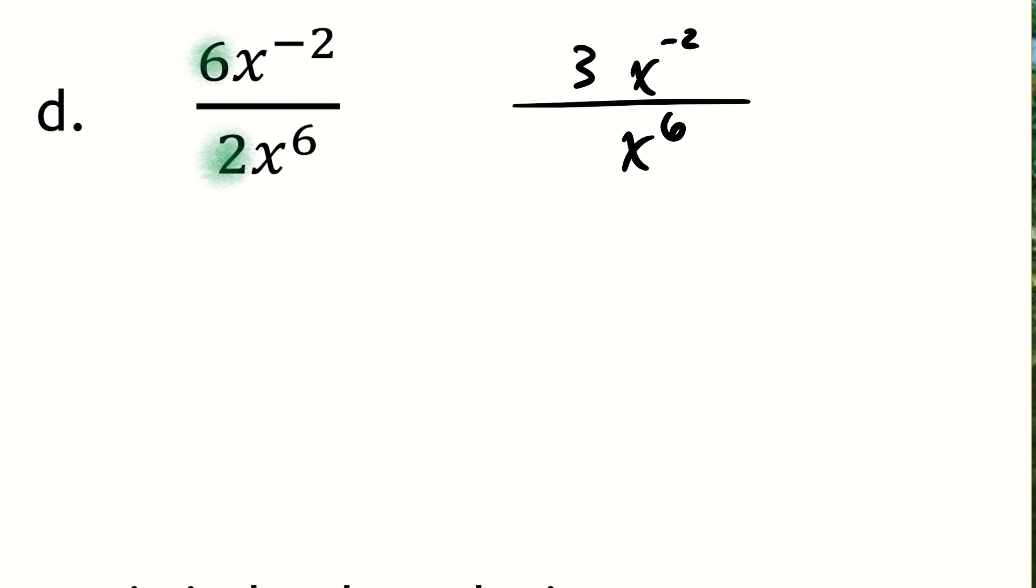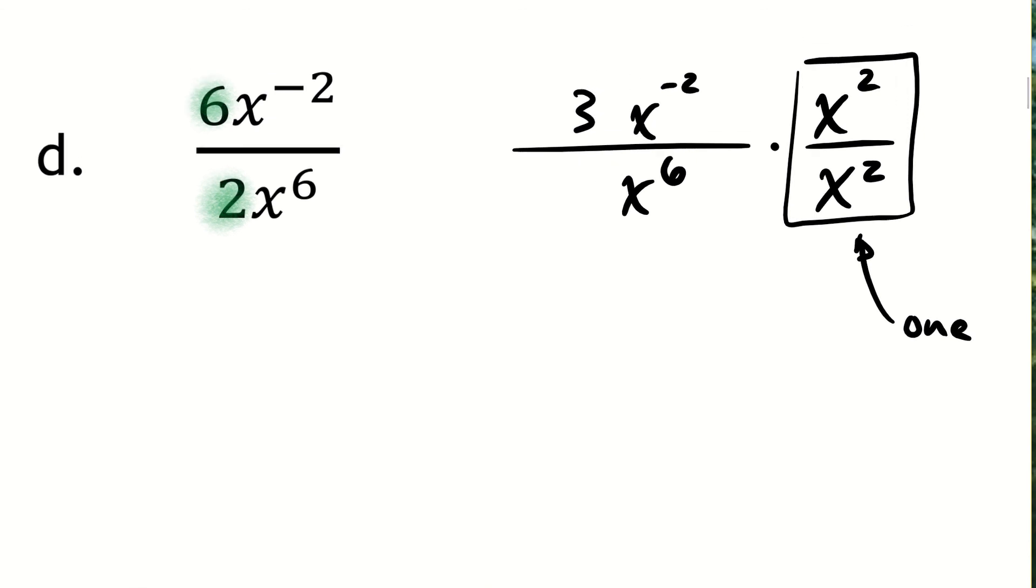To get rid of the negative exponent, I'm multiplying by x to the 2nd power in both the numerator and denominator. Two ideas are at play. First of all, I am multiplying just by the number 1. This is the number 1. So it doesn't change the value of this expression. I'm just using it to manipulate its form. And the way that I'm doing that is when I multiply x to the negative 2nd times x to the positive 2nd, that becomes x to the 0 power.